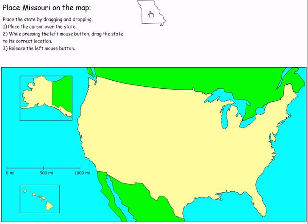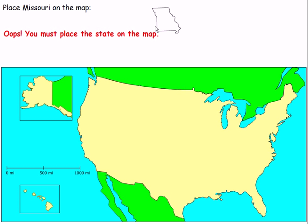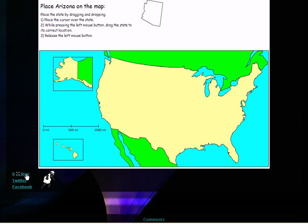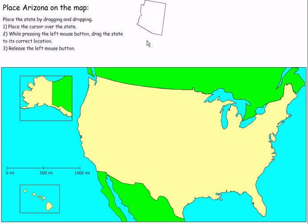So what you do: place the state by dragging and dropping. Place the cursor over the state while pressing the left mouse button, drag the state to its correct location, release the left mouse button. So if you accidentally let go of it while you're on the map, it tells you where it really goes and how many miles you are away, and then it averages how many miles you are away overall. I'm going to reload the web page and resize this to make it bigger so it looks nicer.